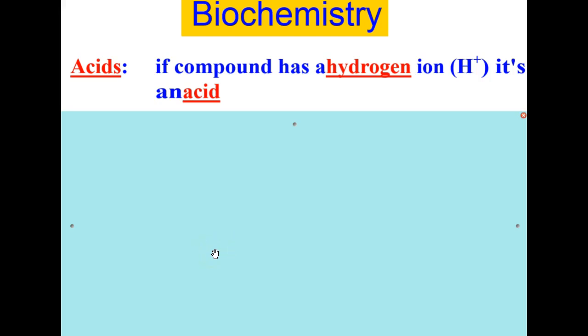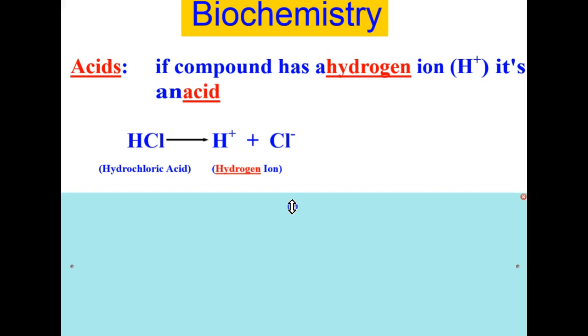Next, we're going to talk about acids. An acid is a compound that has a hydrogen ion, H+. If it has a hydrogen ion, H+, you know it's an acid. A great example of this is hydrochloric acid.